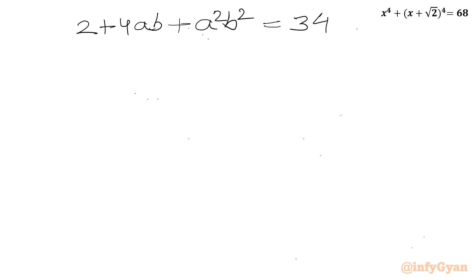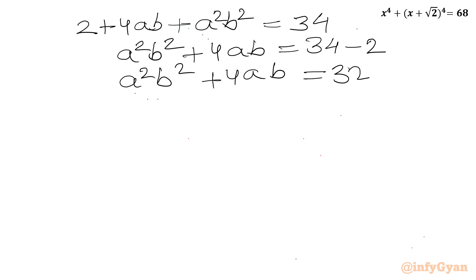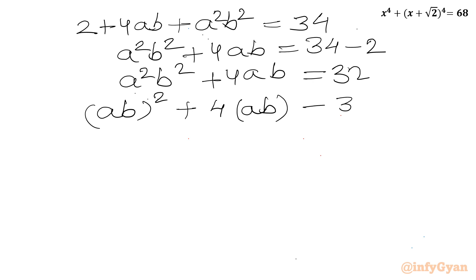Subtracting 2 from both sides: a²b² + 4ab = 32. Or equivalently, (ab)² + 4(ab) - 32 = 0. This is a quadratic equation in ab.